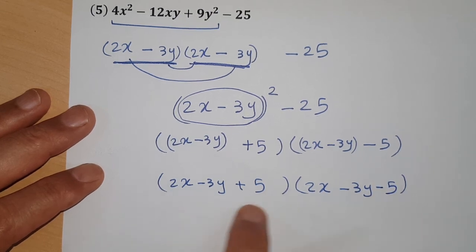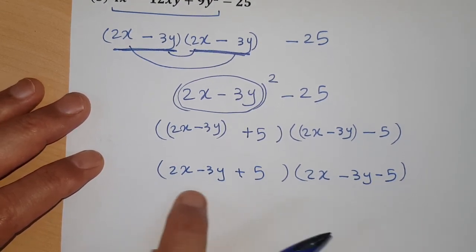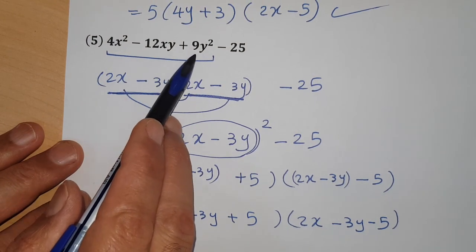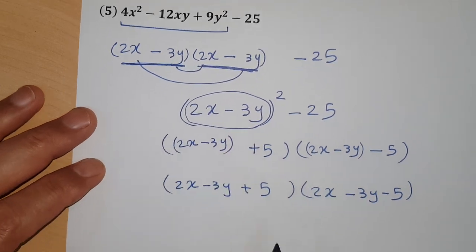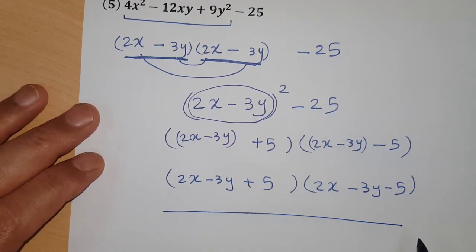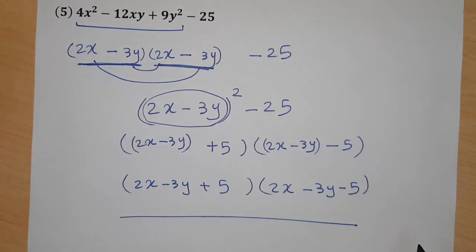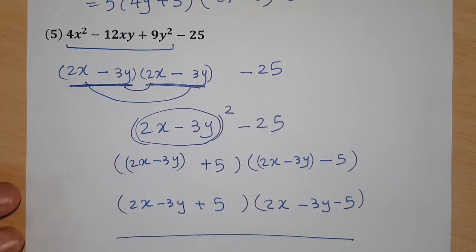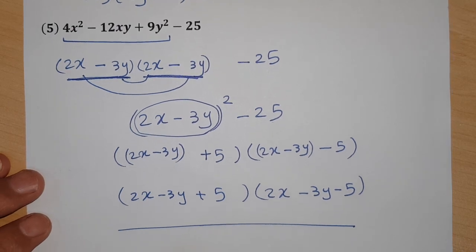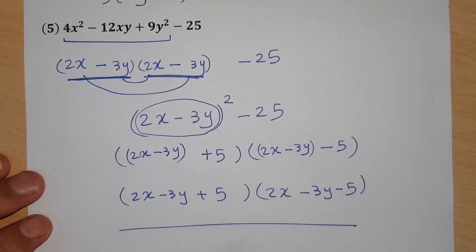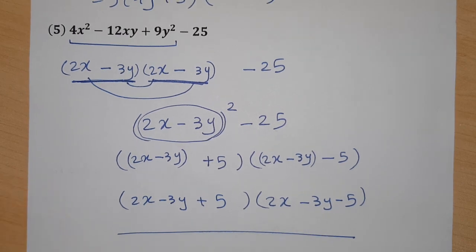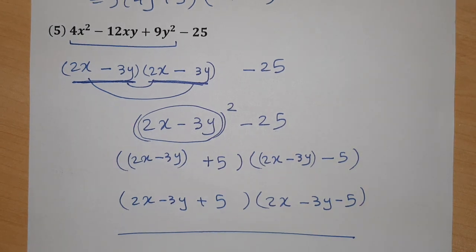If you multiply those two expressions back, you get the original: 4x² - 12xy + 9y² - 25. That's everything I wanted to cover today about factorization by grouping. I hope everyone got the idea. Go and practice until you master the skill. If you have any problems, write in the comments. Thank you and goodbye!